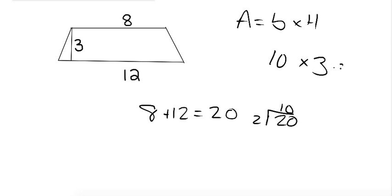Okay, so 10 times 3 equals 30. Alright, so what you're doing is you're doing height times base 1 plus base 2 divided by 2, and that gives you area.